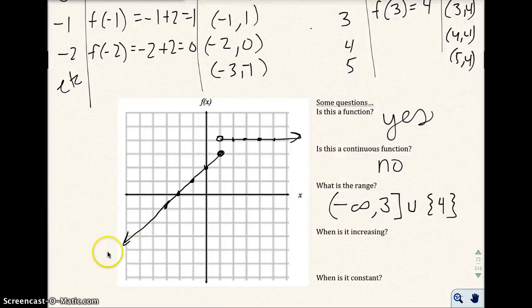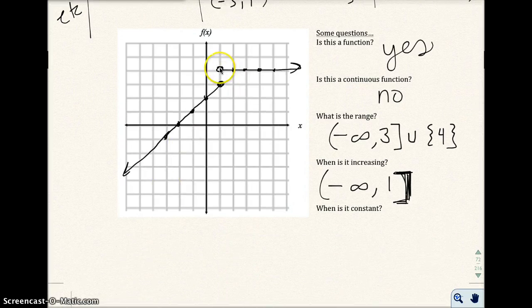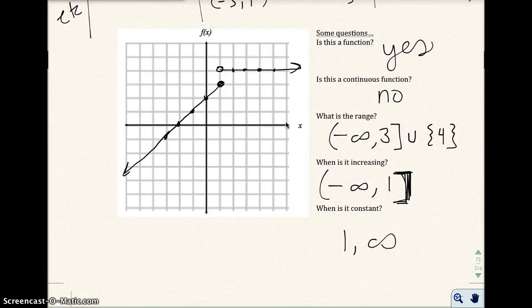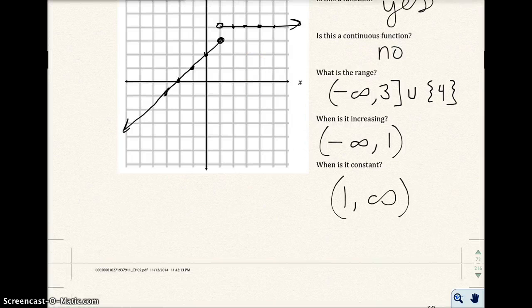When is it increasing? It is increasing from here all the way up to here. So it's going to go from negative infinity all the way to 1. Actually, I made a mistake here. When we talk about increasing and decreasing, we never include the endpoints. Because at 1, it's increasing on this side, but not on the other side of 1. When is it constant? It's constant from here to here. So from 1 to infinity, and we're going to use parentheses around there.